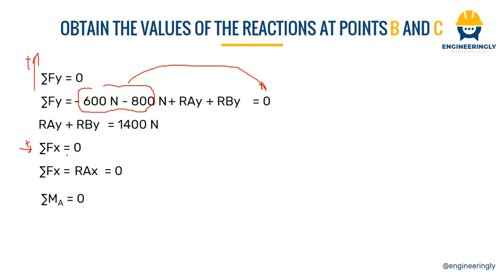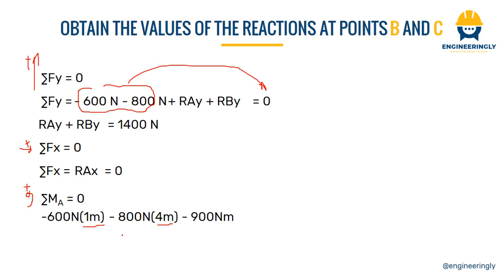And lastly, the summation of moments around point A will be equal to zero. For the moments we will assume the counter-clockwise direction as positive; moments acting in the other direction will have a negative sign. So we will write down: minus 600 Newton — the force — with a moment arm of one meter, which acts in the clockwise direction so the sign is negative. The same applies for the 800 Newton force, but the moment arm this time is four meters. Next we have the 900 Newton·meter moment which acted in the clockwise direction, so again the sign will be negative.